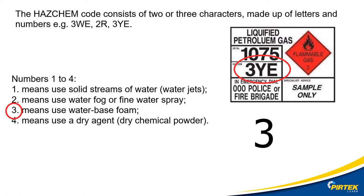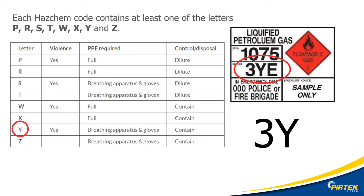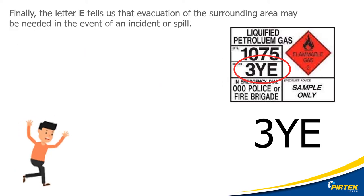The first digit in the Hazchem code is a number that dictates the type of suppressant agent used to extinguish a fire. In our case it's number three, meaning use a water-based foam fire suppressant. Our second digit, Y, indicates a likely violent reaction, spontaneous combustion, ignition or explosion — full PPE including breathing apparatus is recommended in this case. Control and/or disposal: containment, not dilution, is recommended for this type of spill. The final digit, E, means evacuate the surrounding area.